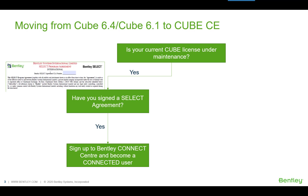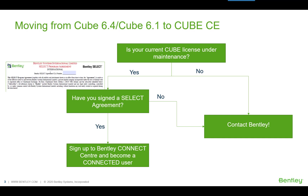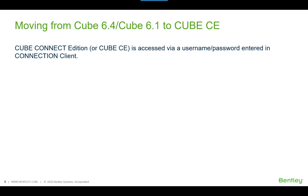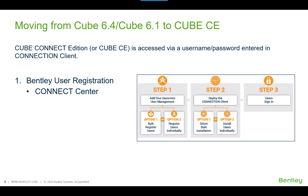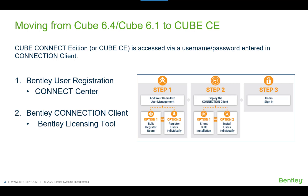Please follow the rest of the instructions in this video to start with Cube Connect Edition. If you do not have current license maintenance or have not signed a Select Agreement yet, please contact your Bentley account manager for further information. While contacting Bentley, you can still access a demo version of Cube Connect Edition for a limited period. Cube Connect Edition is accessed via a username, typically your work email address, a password, and the Connection Client. To run Cube Connect Edition you must: first, register with Bentley and get a username and password; second, install the Connection Client and sign in; and third, run Cube Connect Edition.